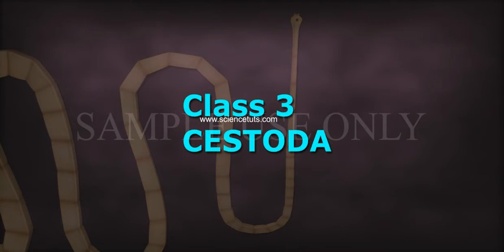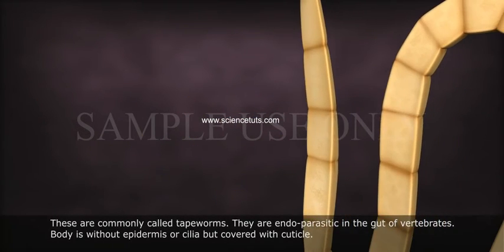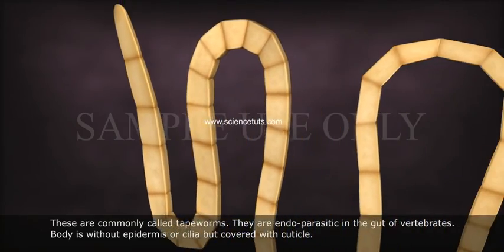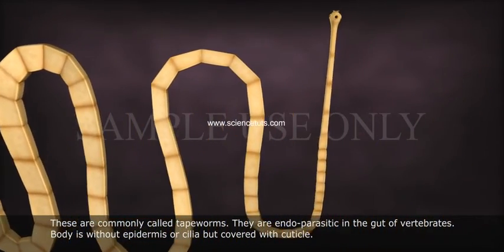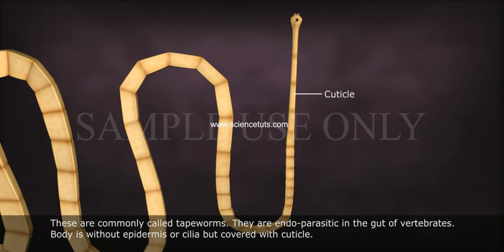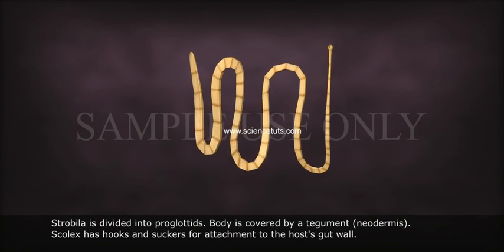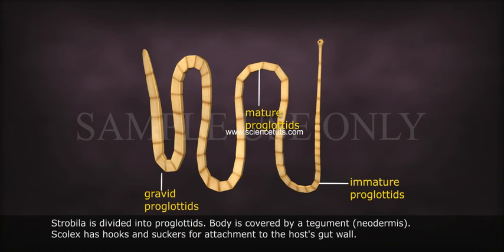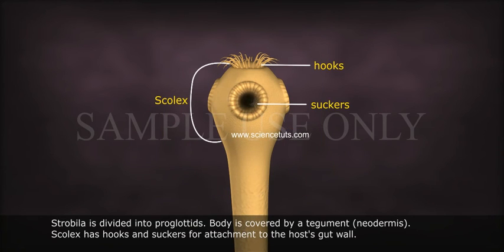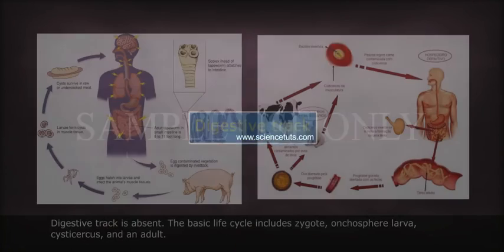Class III: Cestoda. These are commonly called tapeworms. They are endoparasitic in the gut of vertebrates. The body is without epidermis or cilia but covered with a cuticle. Body is divided into scolex, neck, and strobila. They show pseudometamerism. Strobila is divided into proglottids. Body is covered by a tegument (Neodermis). Scolex has hooks and suckers for attachment to the host's gut wall. Digestive tract is absent.